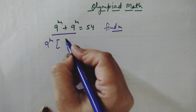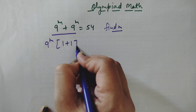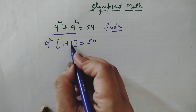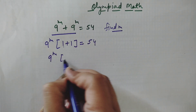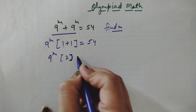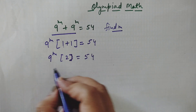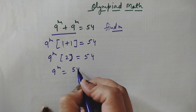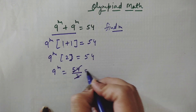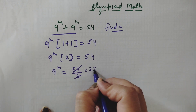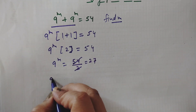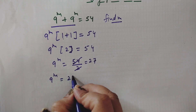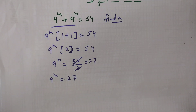First, we can see that 9 to the power m is common, so we factor it out: 9^m times (1 plus 1) equals 54, which gives 9^m times 2 equals 54. Dividing both sides by 2, we get 9^m equals 27.